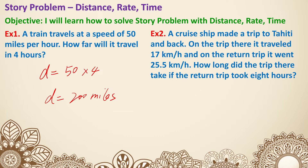Example two: a cruise ship made a trip to Tahiti and back. On the trip there, it traveled 17 kilometers per hour, and on the return trip it went 25.5 kilometers per hour. How long did the trip there take if the return trip took eight hours? One key thing to recognize: the trip there and the trip back cover the same distance.